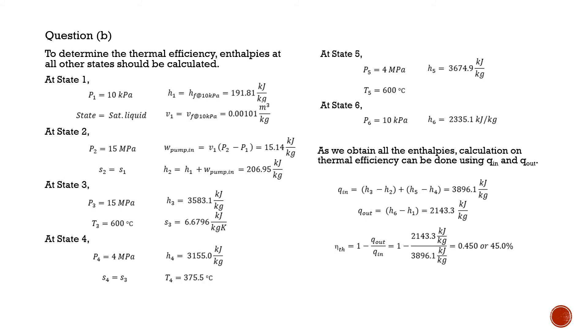For question B, as we apply thermodynamic formula into the problem, we can determine the enthalpy at each different state, and this allows us to calculate the thermal efficiency using Q-in and Q-out. For this particular cycle, thermal efficiency is calculated as 45% as indicated using the calculation.